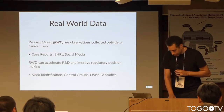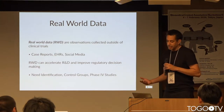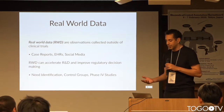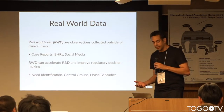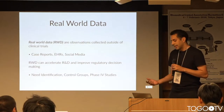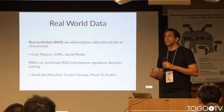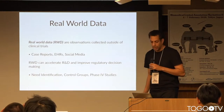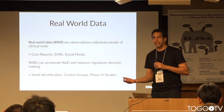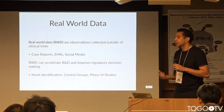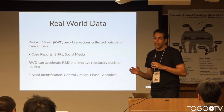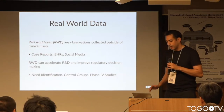To define real-world data a little bit: real-world data is very broad. It's basically observations that are captured outside of the context of clinical trials. Some of the sources people think about include case reports published in literature, electronic health record data, patient registries — which are being implemented right now — and social media, which is probably a little more experimental.